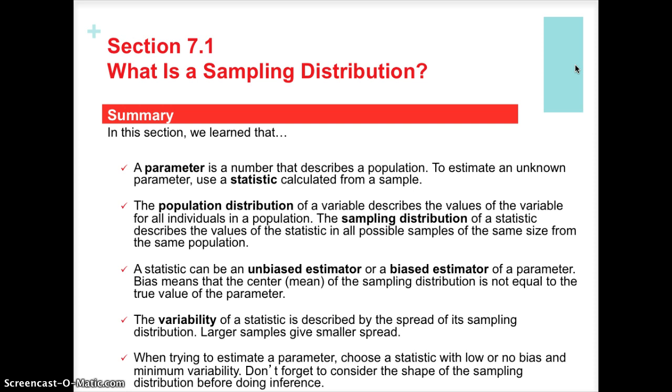Okay, so what have we learned in 7.1? A parameter is a number that describes a population. Remember, P for population, P for parameter, very easy way to do it. And for parameters, we generally use Greek letters like mu.